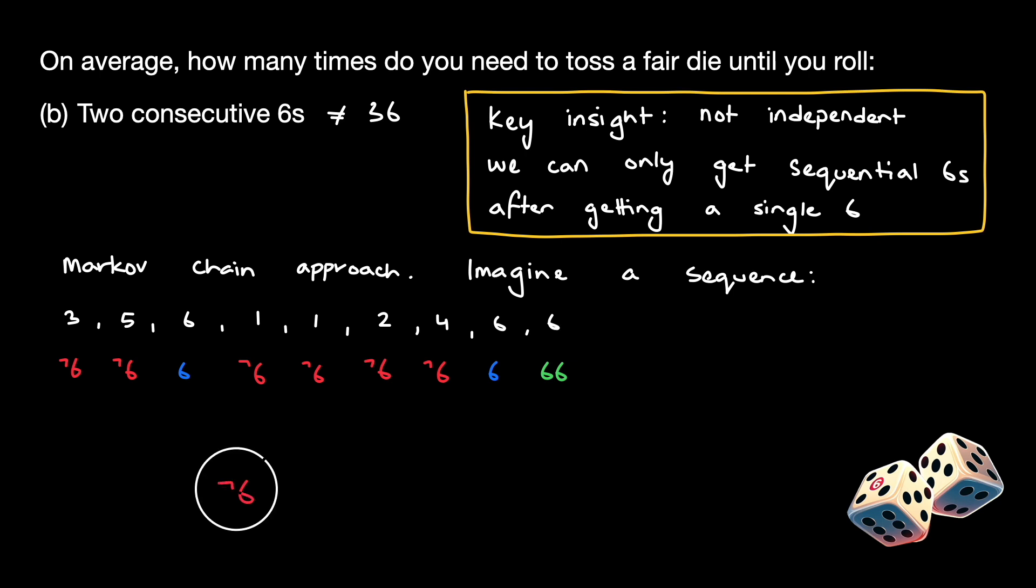Thus, let's write out the transition diagram for this Markov chain. Again, we have our three states, NOT-6, SINGLE-6, and consecutive sixes. Similar to part A, we know the transition probabilities from NOT-6 to 6. Now, we try to find the transition probabilities from 6 to consecutive sixes. We know that if we are currently at the state 6, we still have a 1/6 chance of moving to consecutive sixes. However, the key difference here is that if we roll something that is NOT-6, we reset back to the original state of the Markov chain. Thus, we have a 5/6 chance of falling back a state instead of staying in our current state.